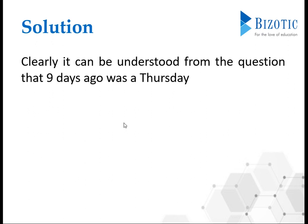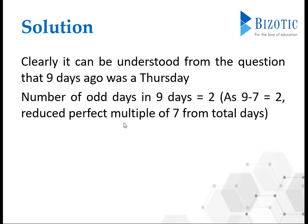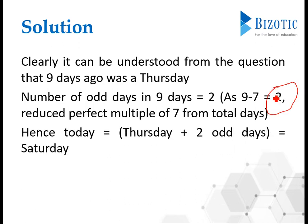Let's begin with the solution. Clearly it can be understood from the question that nine days ago was a Thursday, because he goes to watch movies only on Thursday. If you rule out a week from nine days, it will give you two odd days.